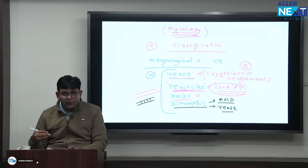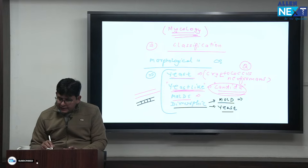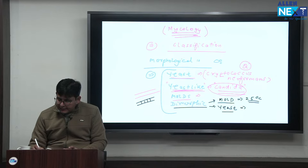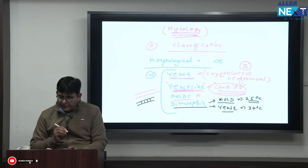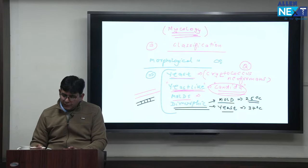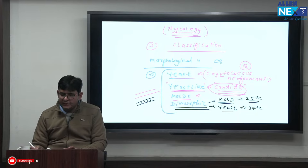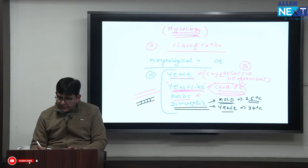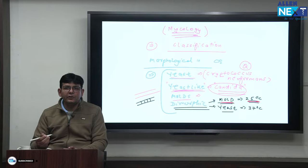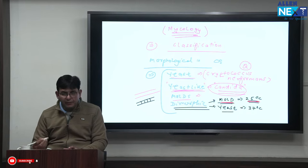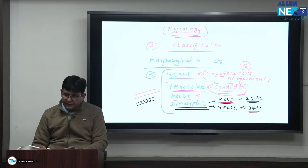How to remember at what temperature they are mold versus yeast: mold is at 25°C, yeast is at 37°C — that is the definition of dimorphism. Remember: mold is gold, and 25-carat gold. Yeast is at body temperature, 37°C.